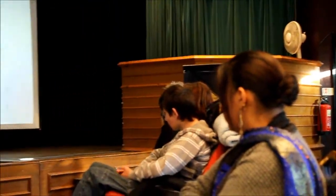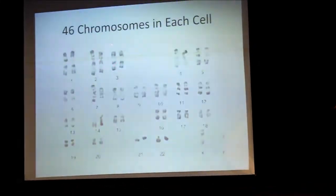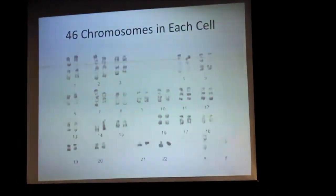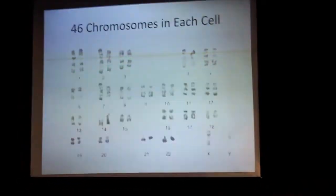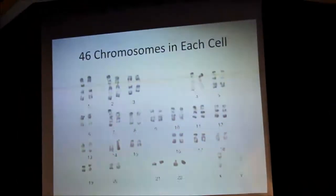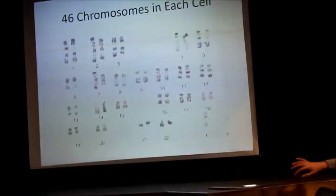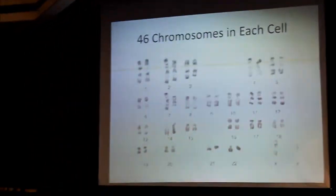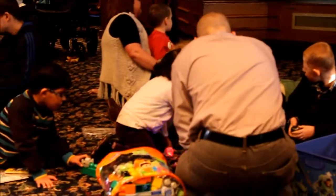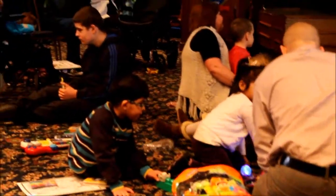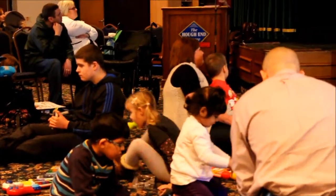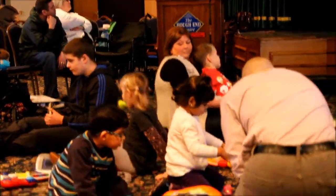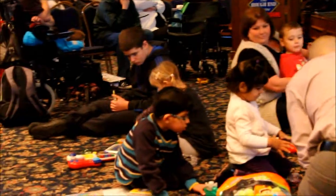We get one number 1 from our mum and one from our dad, and so on — so you get half your chromosomes from your mum and half from your dad. We've got 22 ordinary chromosomes, and then we've got two which are rather special: these are the sex chromosomes, which determine whether you're going to be a boy or a girl.